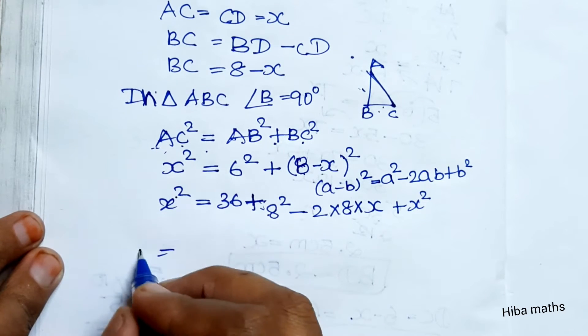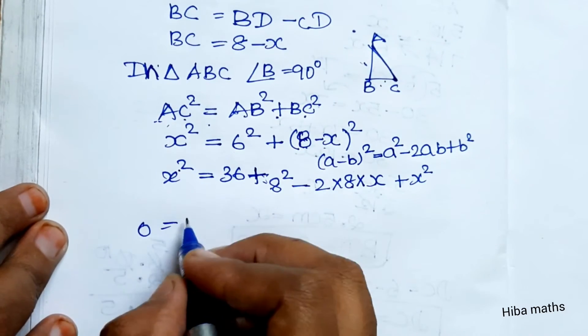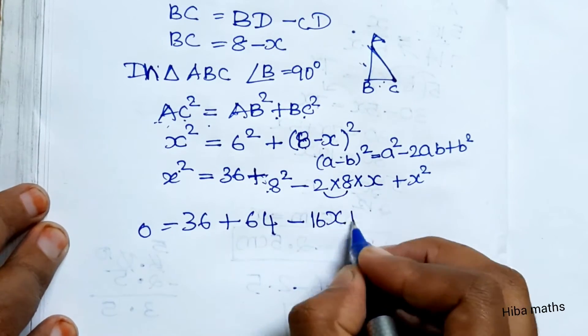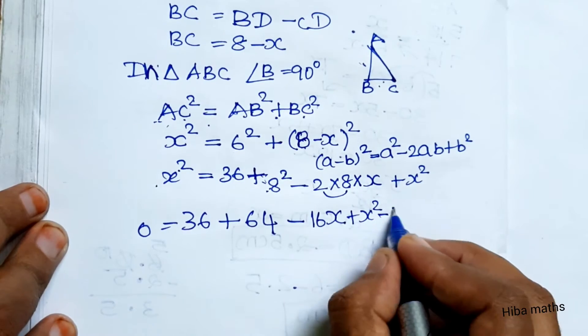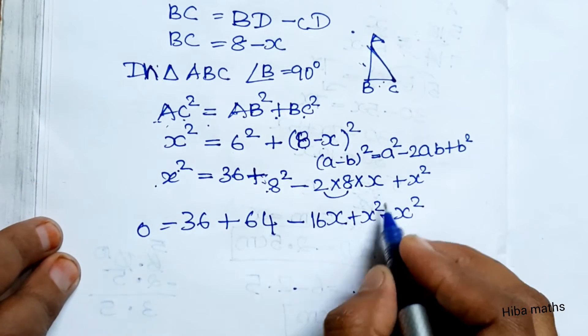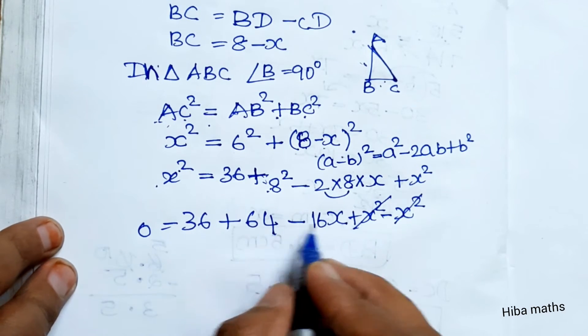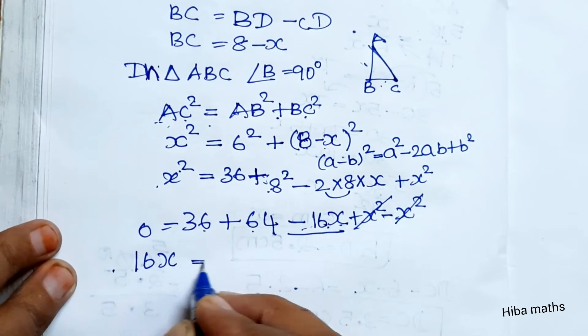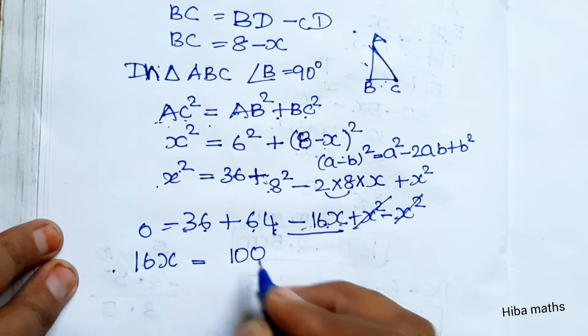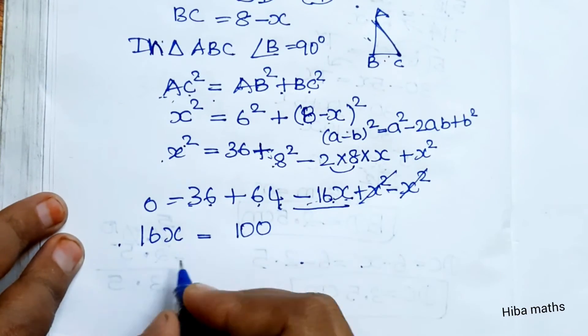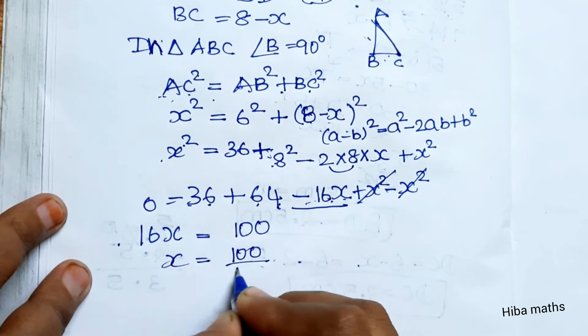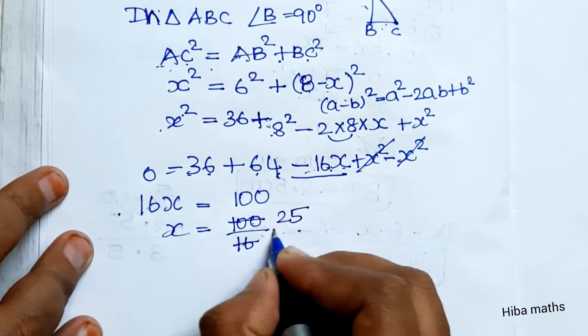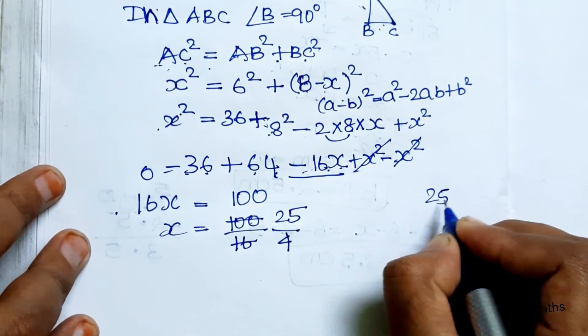x squared on both sides cancel. So 36 plus 64 minus 16x plus x squared. The x squared terms cancel. Moving terms: 16x equals 36 plus 64, which is 100. So x equals 100 divided by 16.